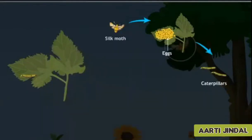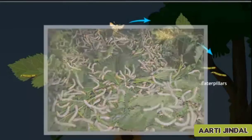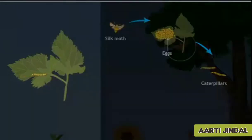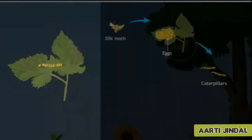Caterpillars eat a large amount of leaves and increase in size at a very rapid pace. After 25 to 30 days, they move to a chamber in the bamboo tray, where they spin a cocoon and get attached to the tray.